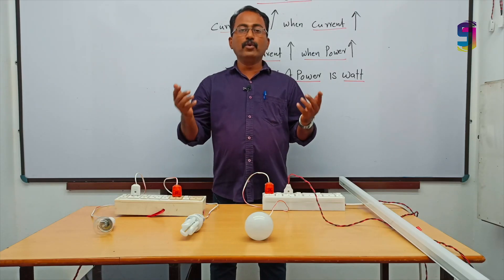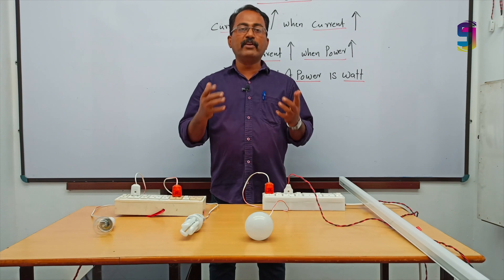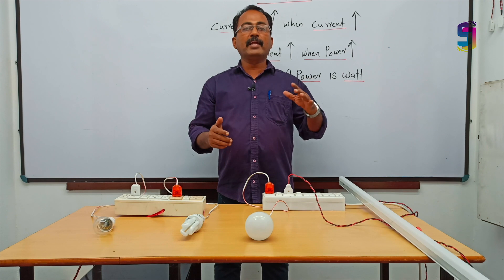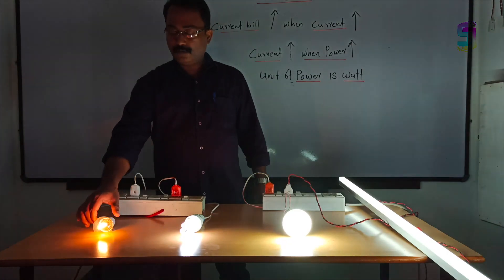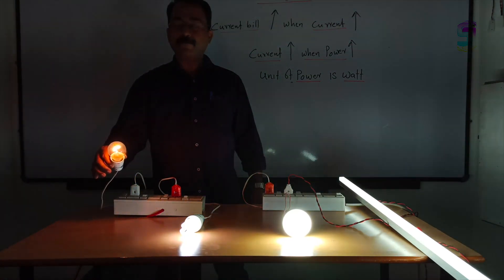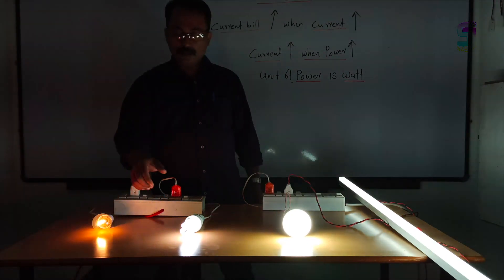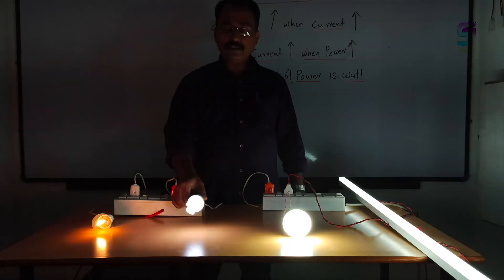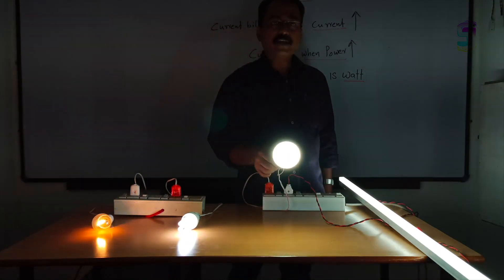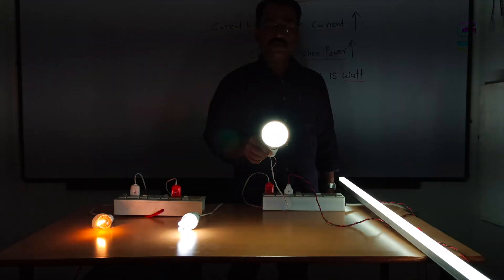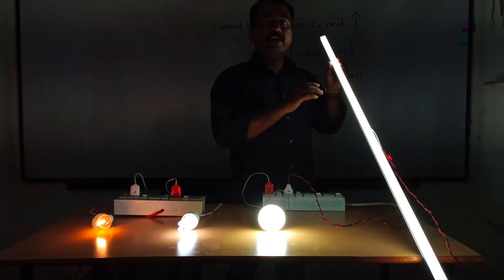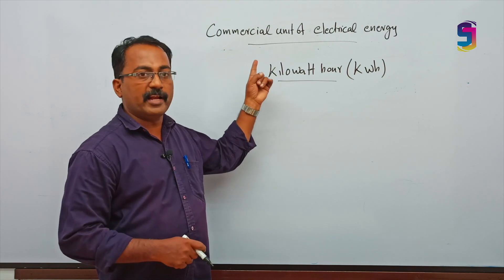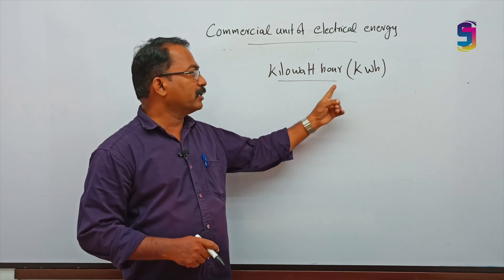Now I am doing a comparative study of different types of lamps: the incandescent lamp, the CFL lamp, and the LED bulb. This is an incandescent lamp of 25 watt. This is a CFL lamp of 20 watt. This is an LED bulb of 20 watt. This is an LED tube light of 20 watts. The commercial unit of electrical energy is kilowatt hour, kWh.